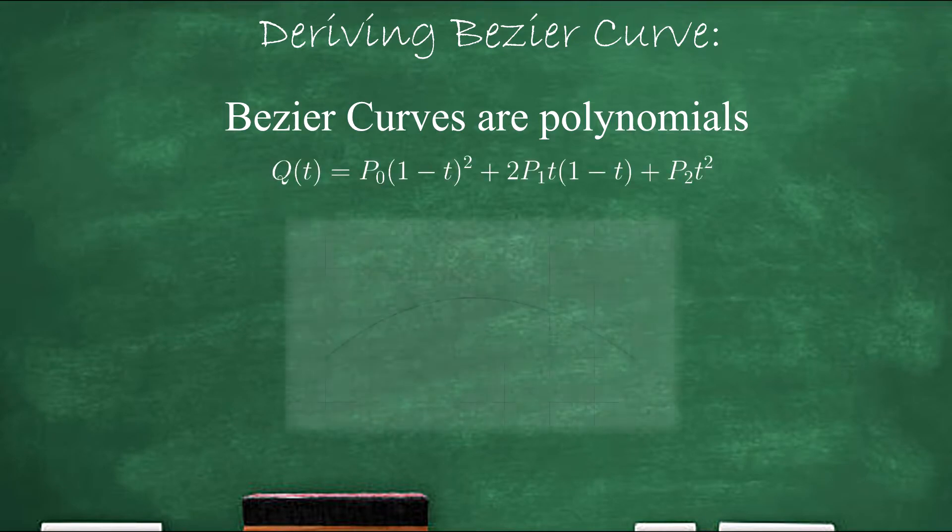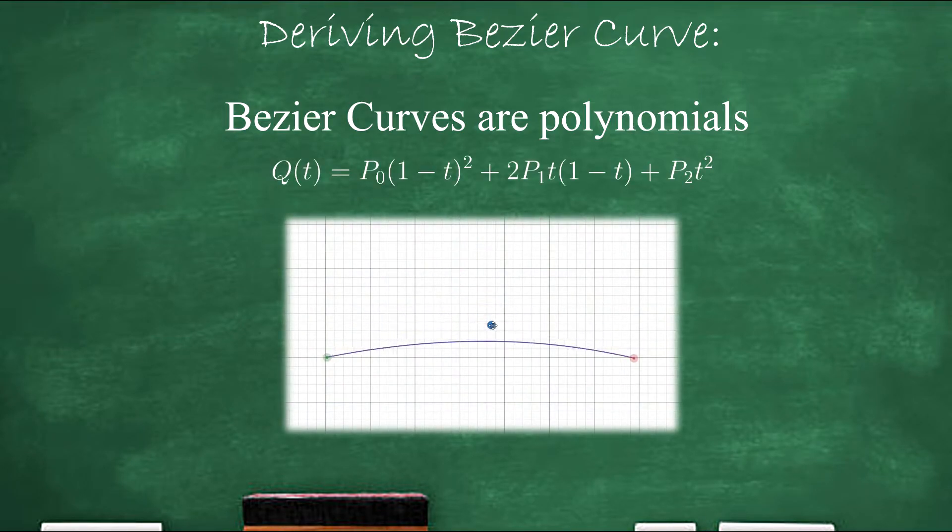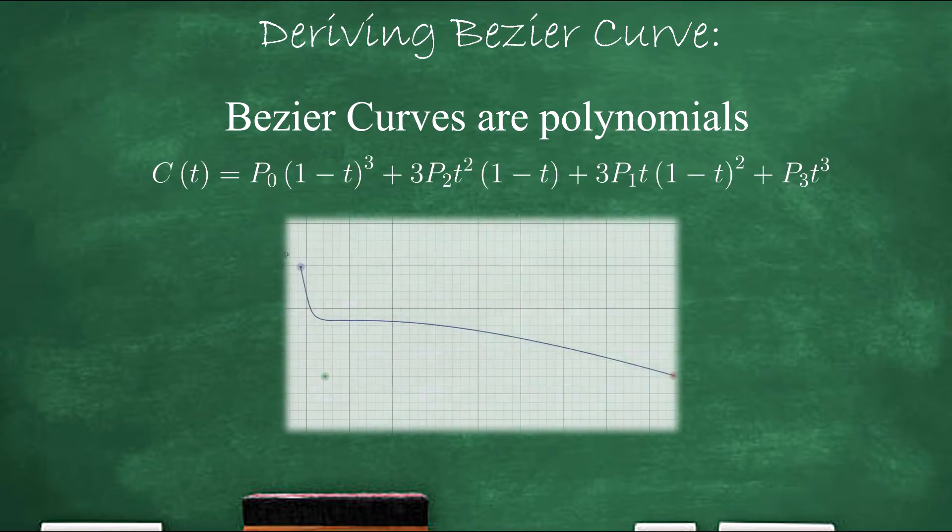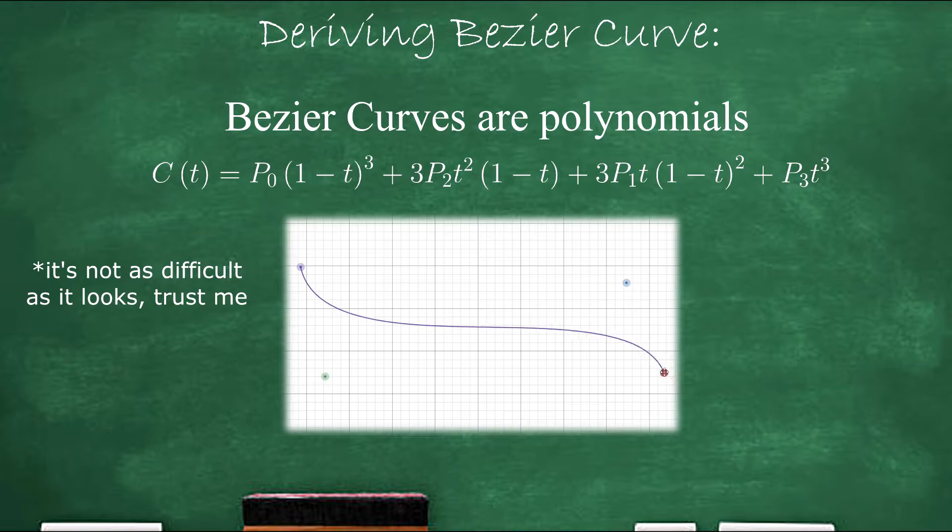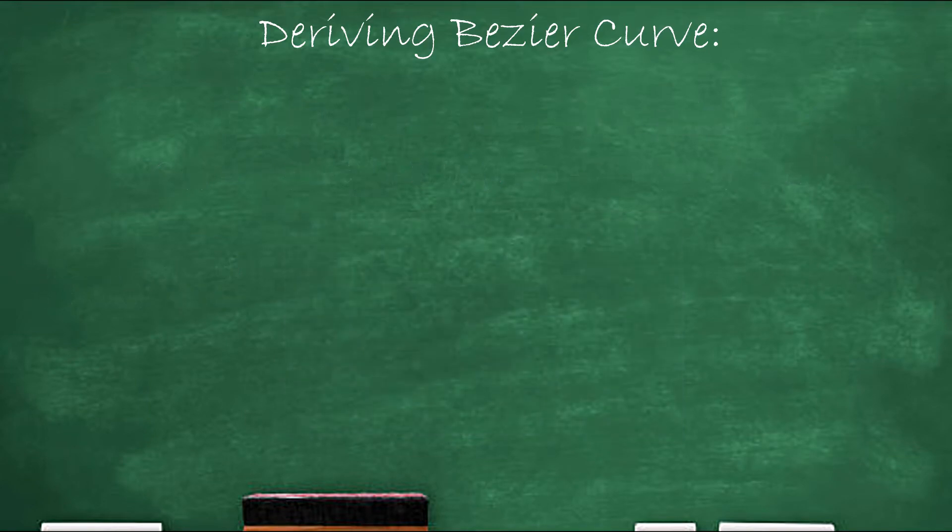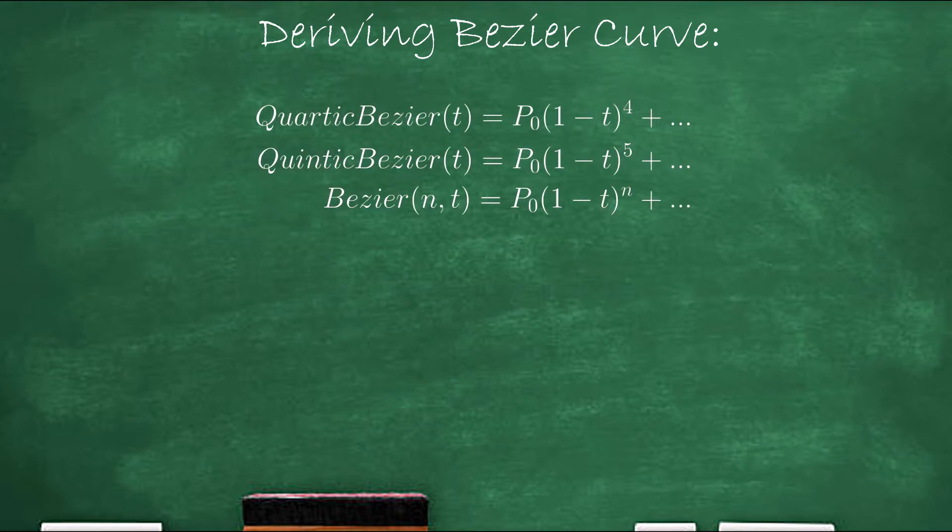For example, this is what a second degree Bezier curve, or quadratic Bezier curve, looks like. But you could also have a third degree, or cubic Bezier curve, that looks like this. And you can just keep on going forever having a fourth degree, fifth degree, or nth degree Bezier curve.